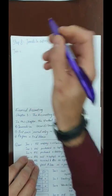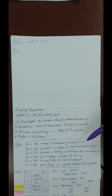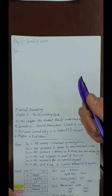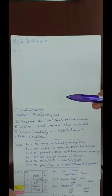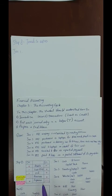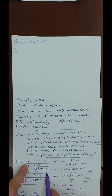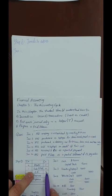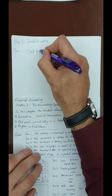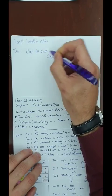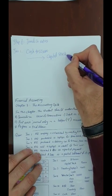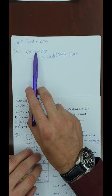Step one: journalize the entries. Jan 1 — the company was established by investors depositing $50,000 into the business. Cash goes up by $50,000 and owner's equity increases by the same value. Owner's equity increases by credit and assets increase by debit, so I need to debit cash and credit capital stock. DR Cash $50,000, CR Capital Stock $50,000.